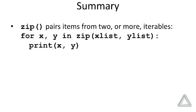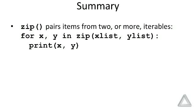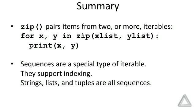Then in the body of this for loop, we just print those two elements or items from the iterables. Then we also mentioned that sequences are a special type of iterable. They support indexing, and strings, lists, and tuples are all sequences.